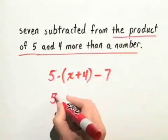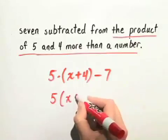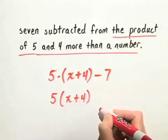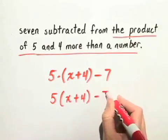This can be written as 5 times the quantity x plus 4 minus 7.